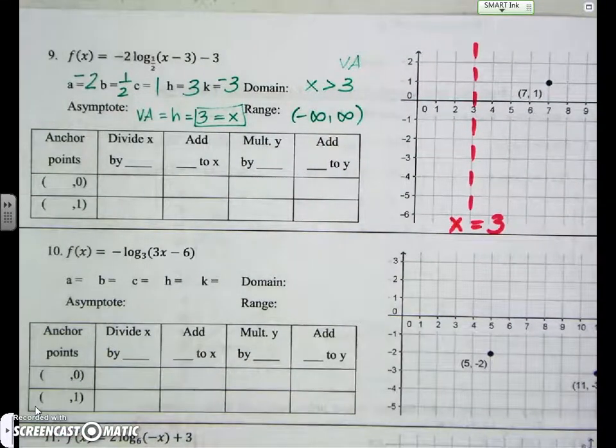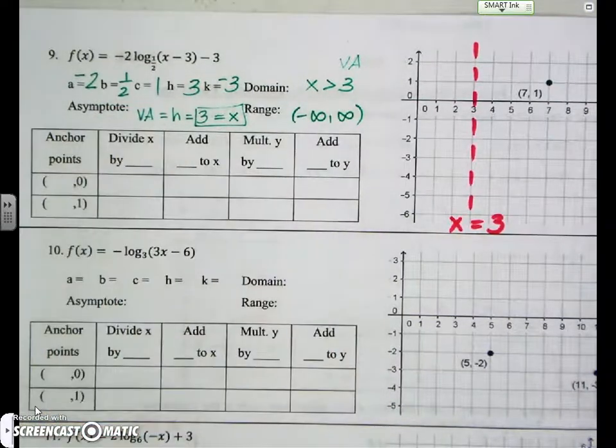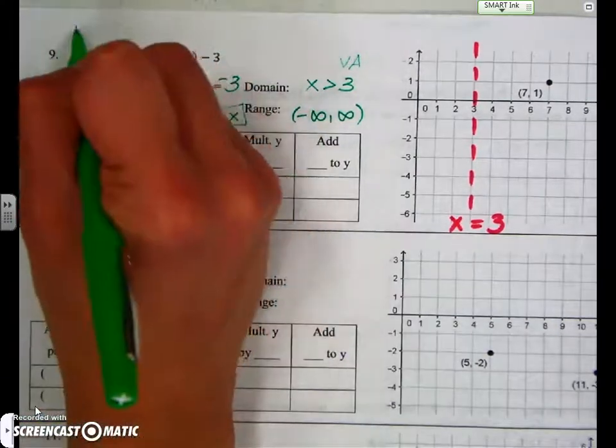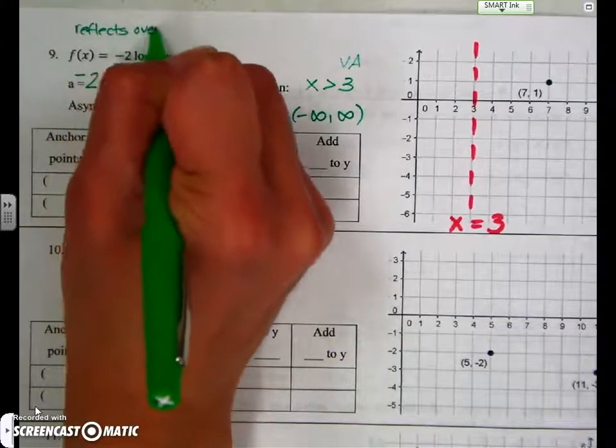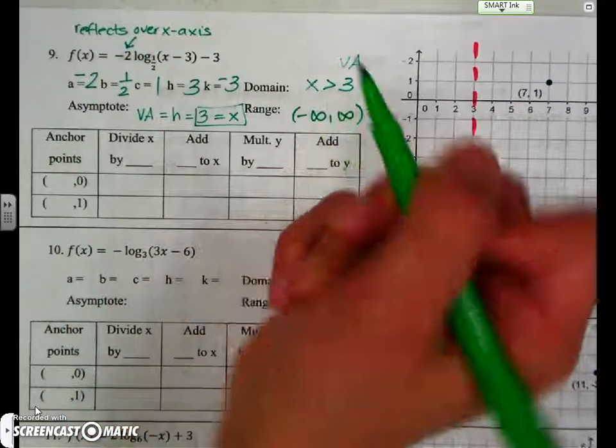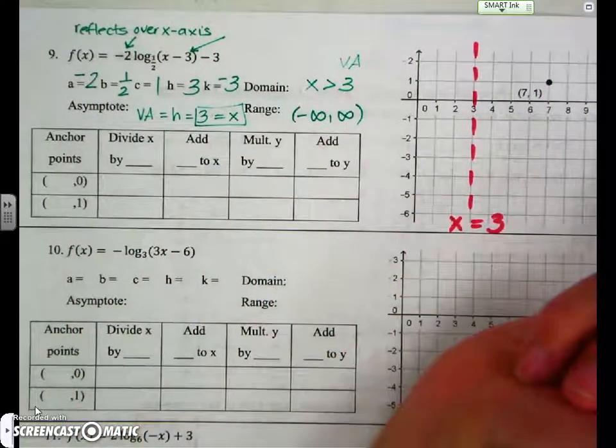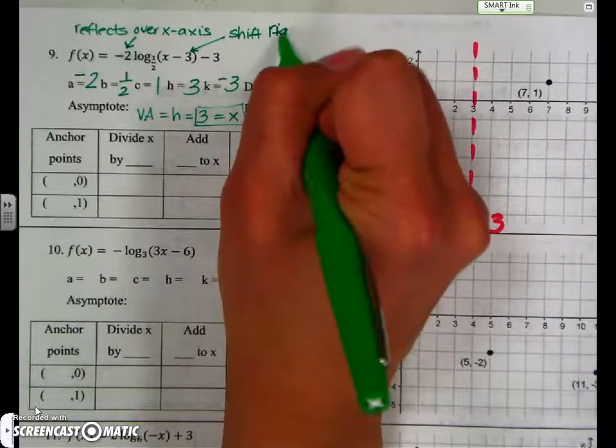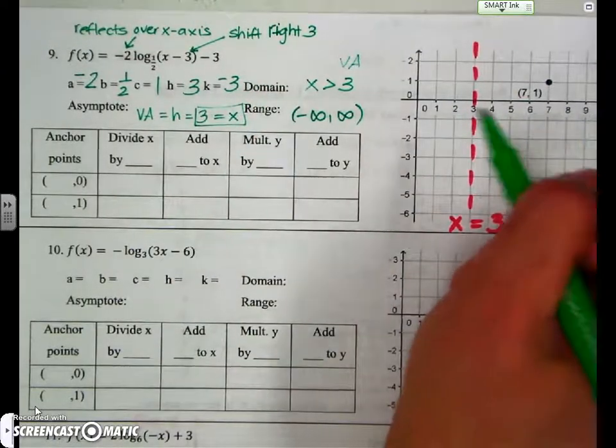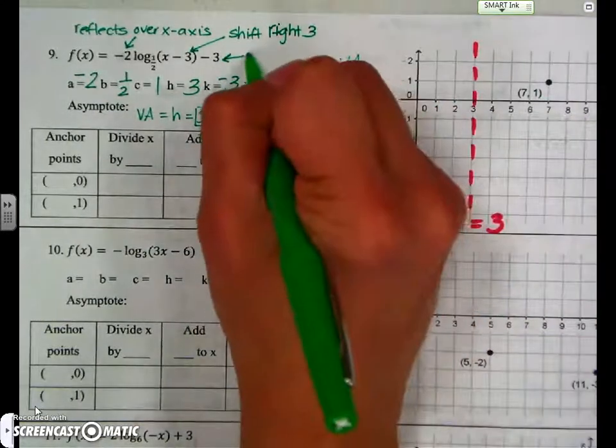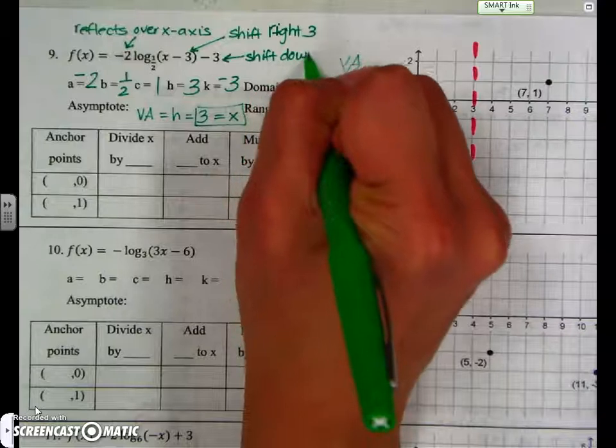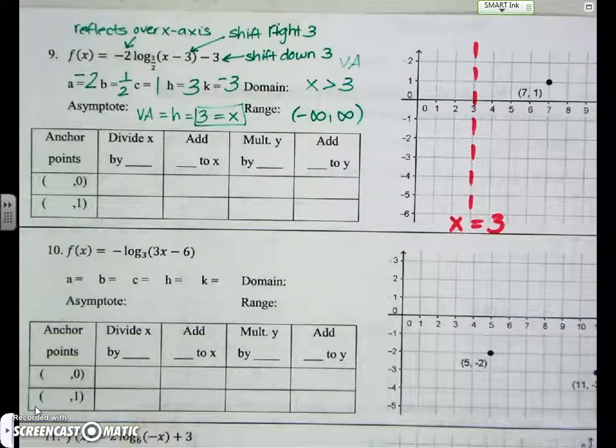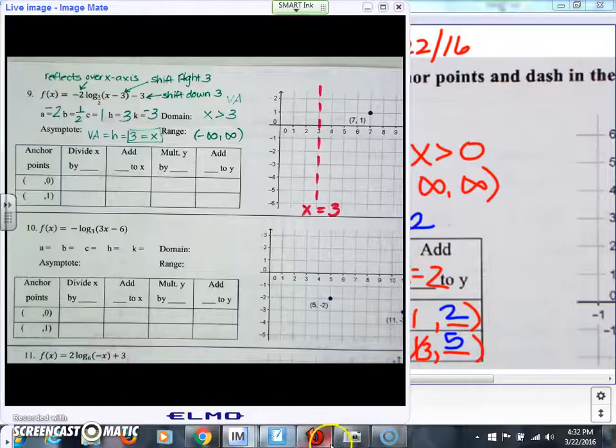Now I want you to describe the transformations. What does a negative 2 do to the graph? It reflects over the x-axis. What does a minus 3 do to the graph? To the left or to the right? Shifts to the right, 3. It's going this way. And then the minus 3 on the outside? Shift down 3 units. Now let's say you don't know that off the top of your head. You're going to graph both of them. You're going to graph the parent function and then the transformation.